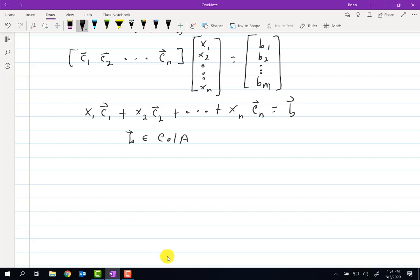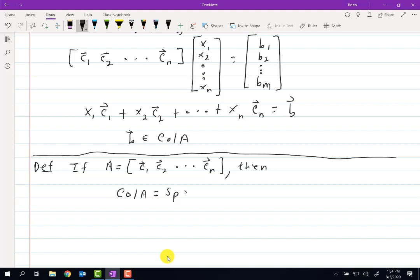So realizing by now that I did not actually define what column space was, let me do it right now. This will be a definition. So if A equals, and this is where A is breaking it up into column format c1, c2, ..., cn, then the column space of A equals the span of those column vectors.